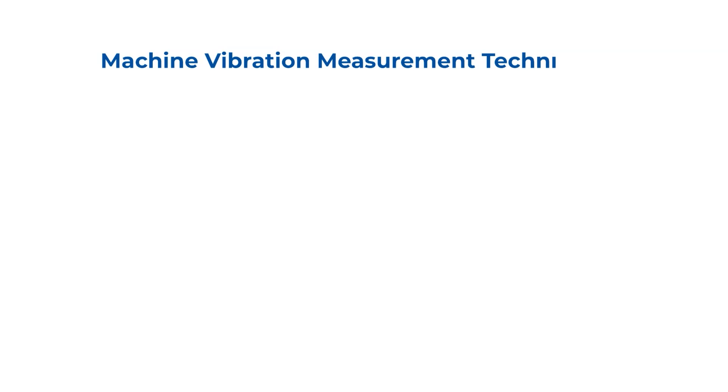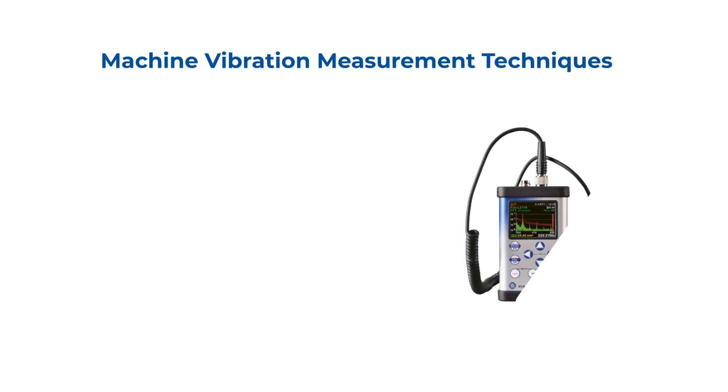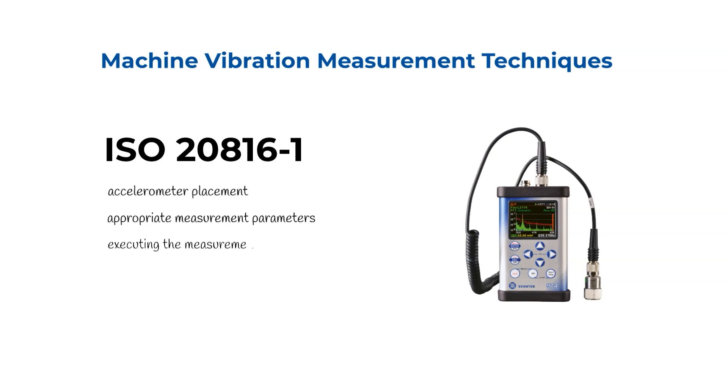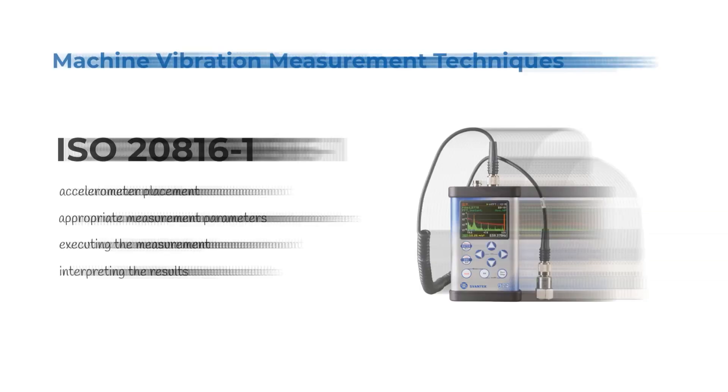Machine vibration measurement techniques are described by the ISO 20816-1 standard. These vibration analysis techniques involve accelerometer placement, setting appropriate measurement parameters, executing the measurement, and interpreting the results.